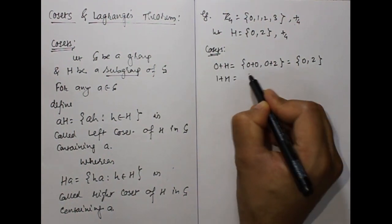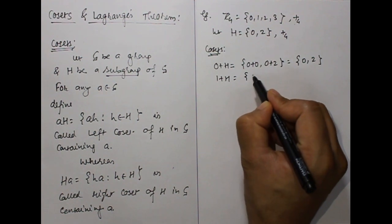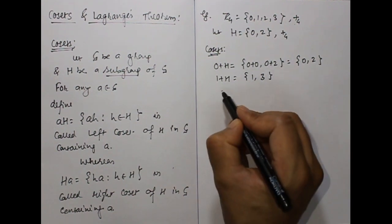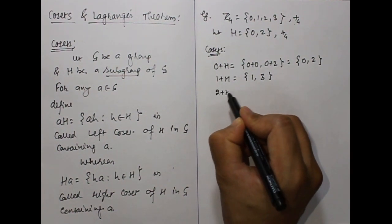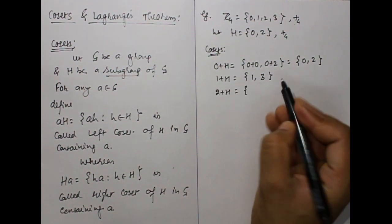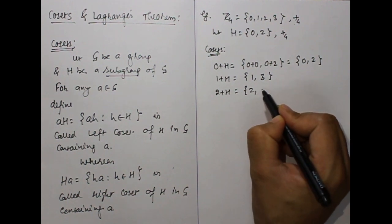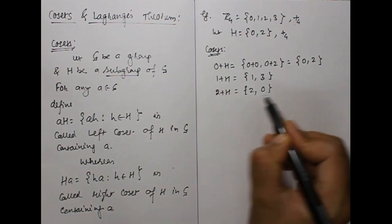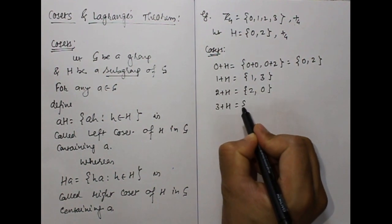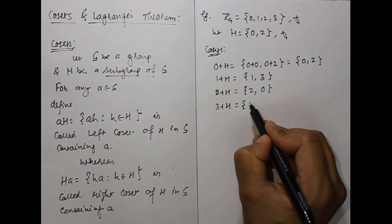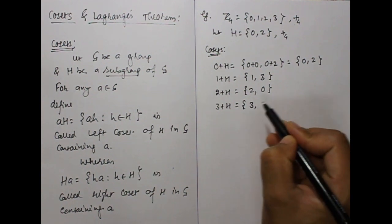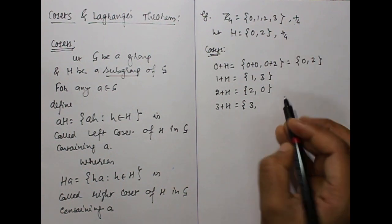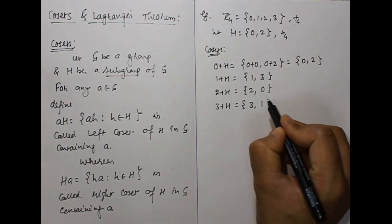1 + H gives 1 + 0 = 1 and 1 + 2 = 3, so {1, 3}. Similarly, 2 + H gives 2 + 0 = 2 and 2 + 2 = 4, but addition modulo 4 gives 0, so {2, 0}. For 3 + H: 3 + 0 = 3 and 3 + 2 = 5, but addition modulo 4 gives 1, so {3, 1}.